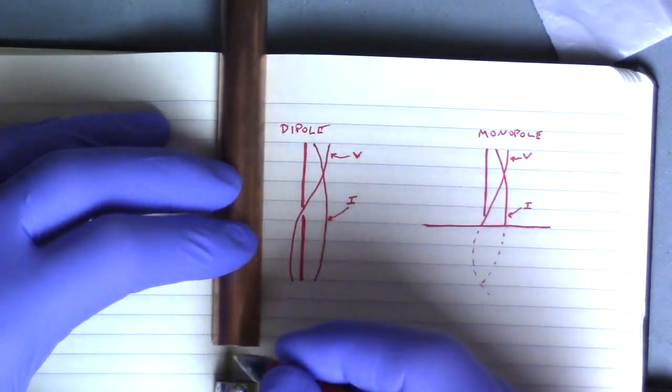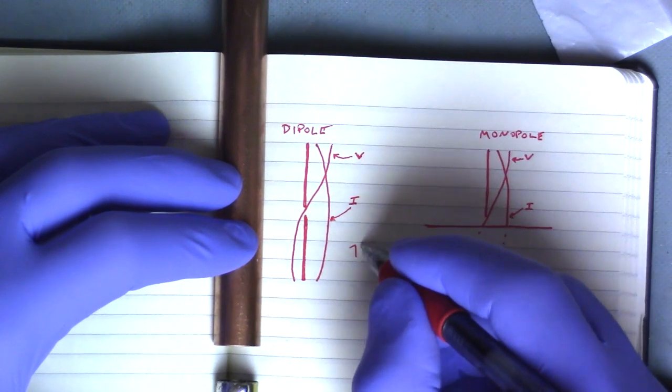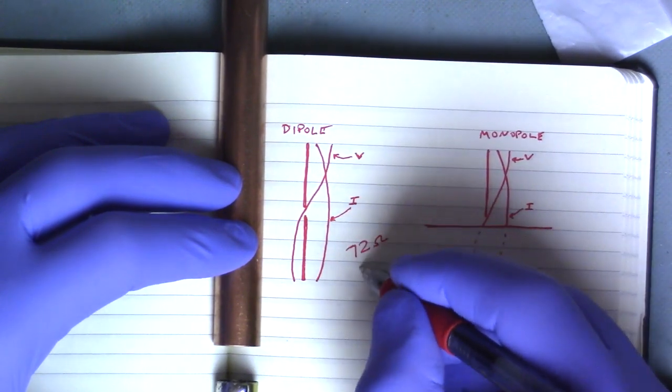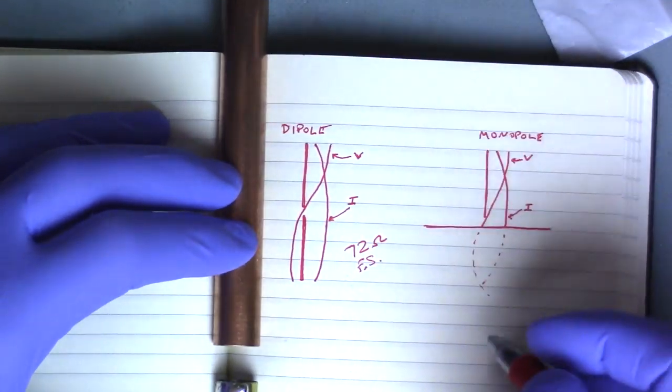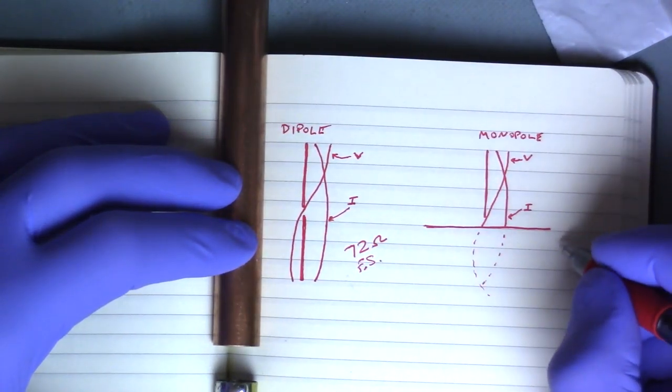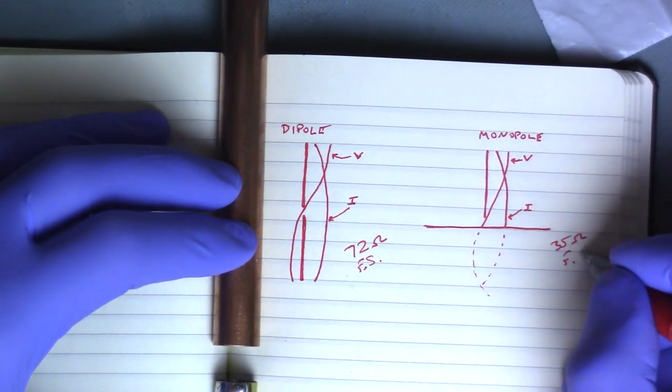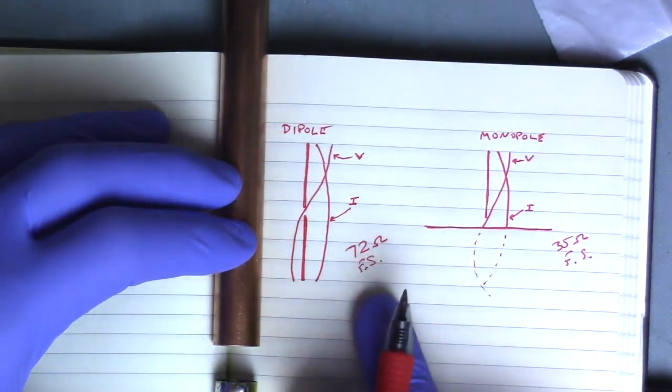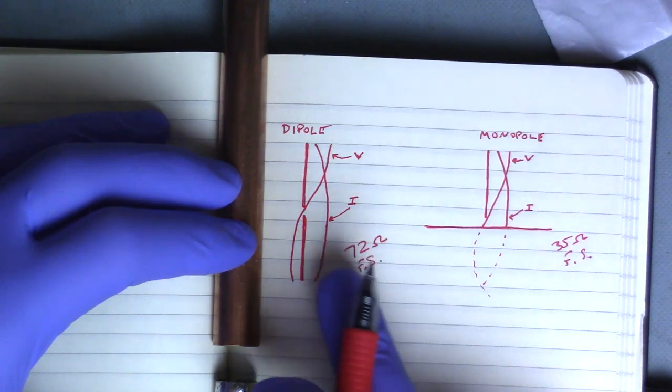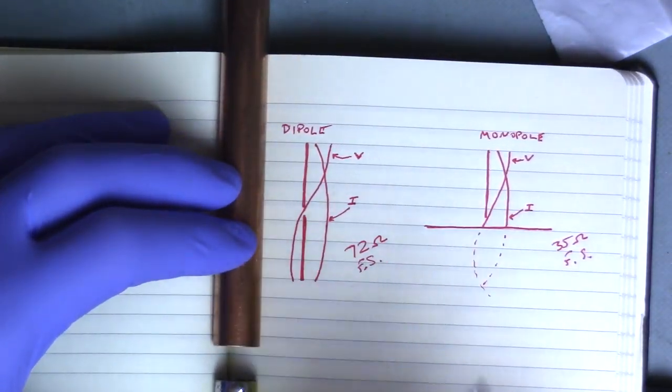Now the free space impedance, that means if this antenna were out in space, it would be about 72 ohms, I believe, in free space. Just as a contrast, our monopole is going to be about 36, 35, something like that of free space impedance. Now as we bring those antennas closer to the ground, physical earth, that's going to change, depending on the wavelength that you're driving it with.